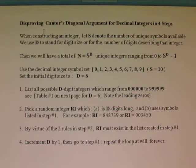Step 3: By virtue of the two rules in step number 2, RI must exist in the list created in step 1.